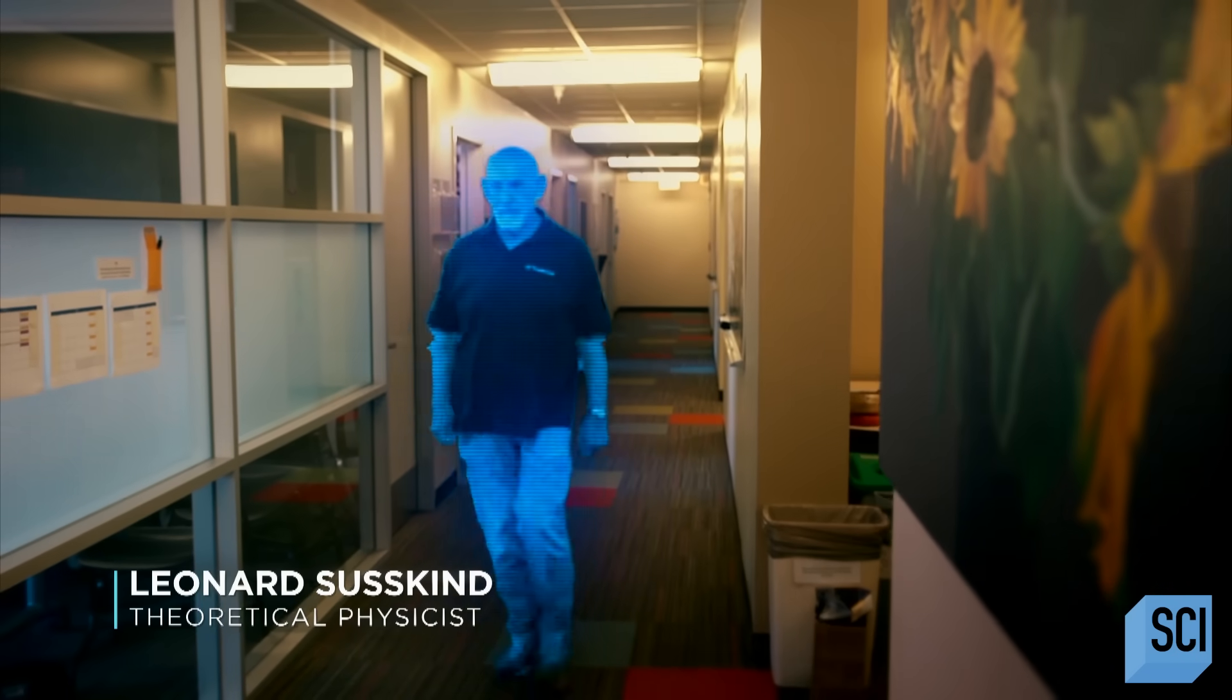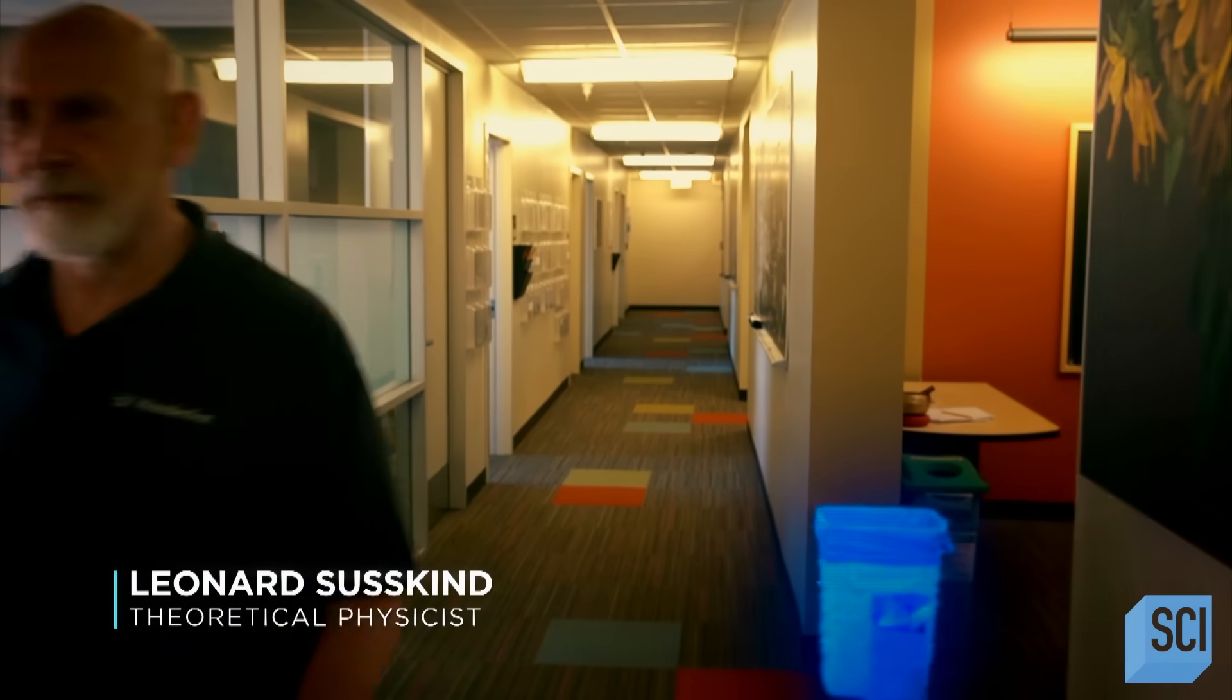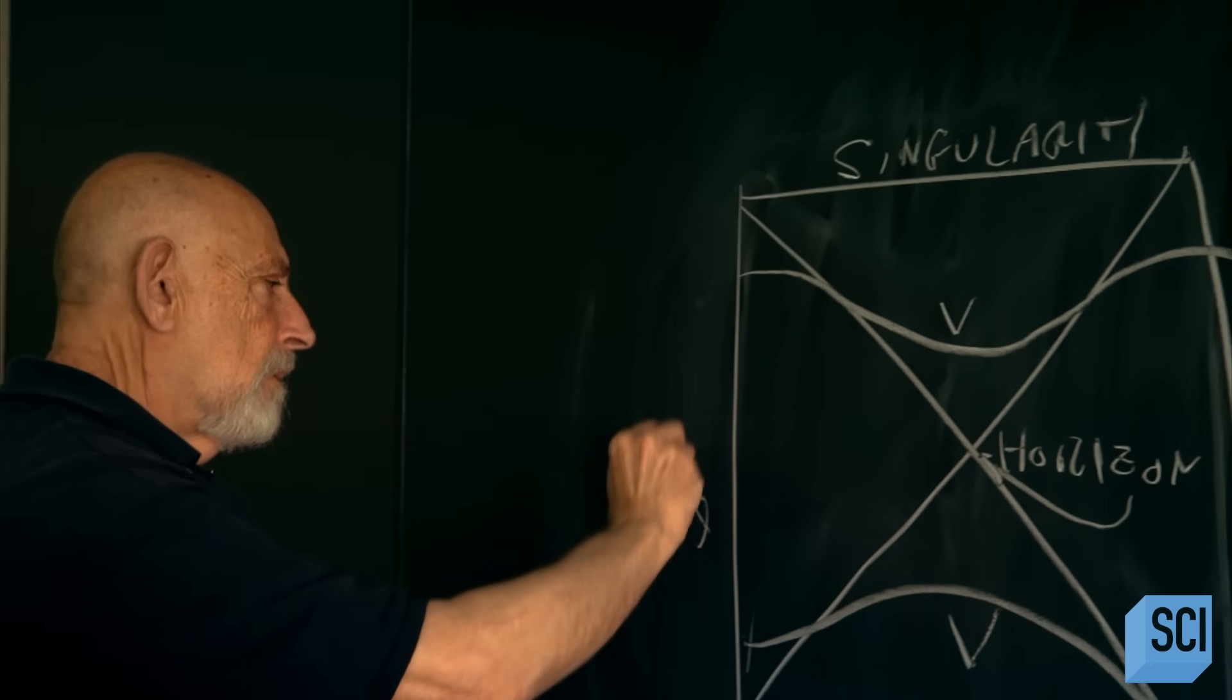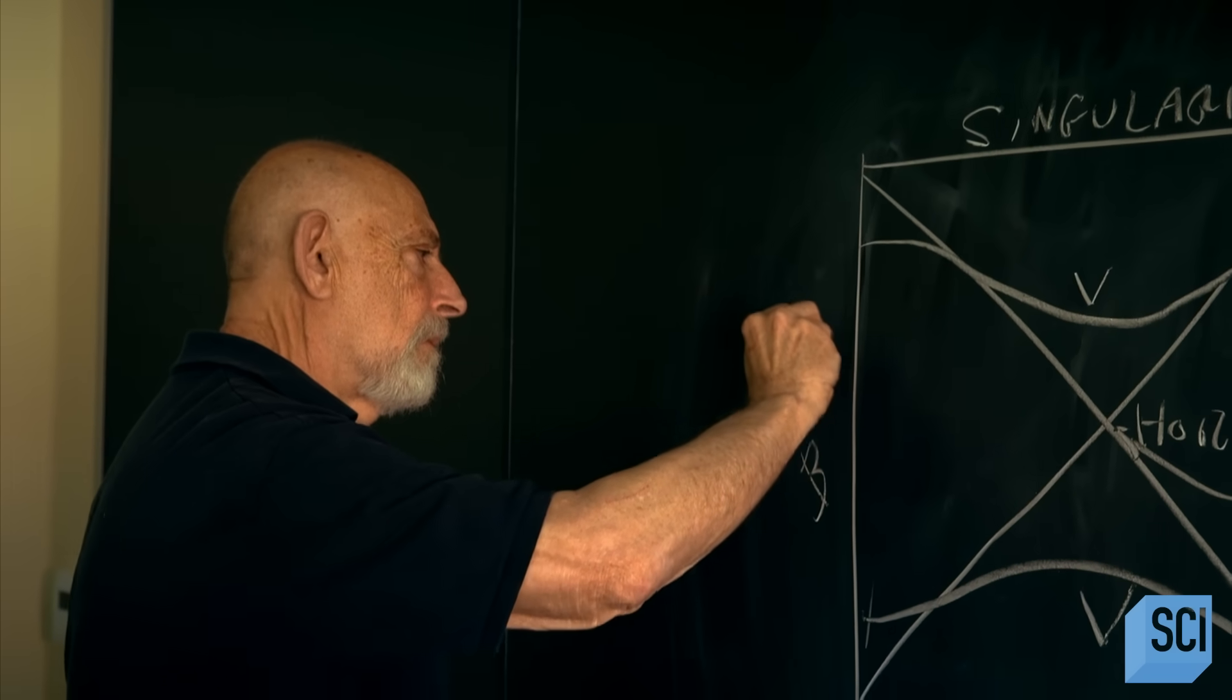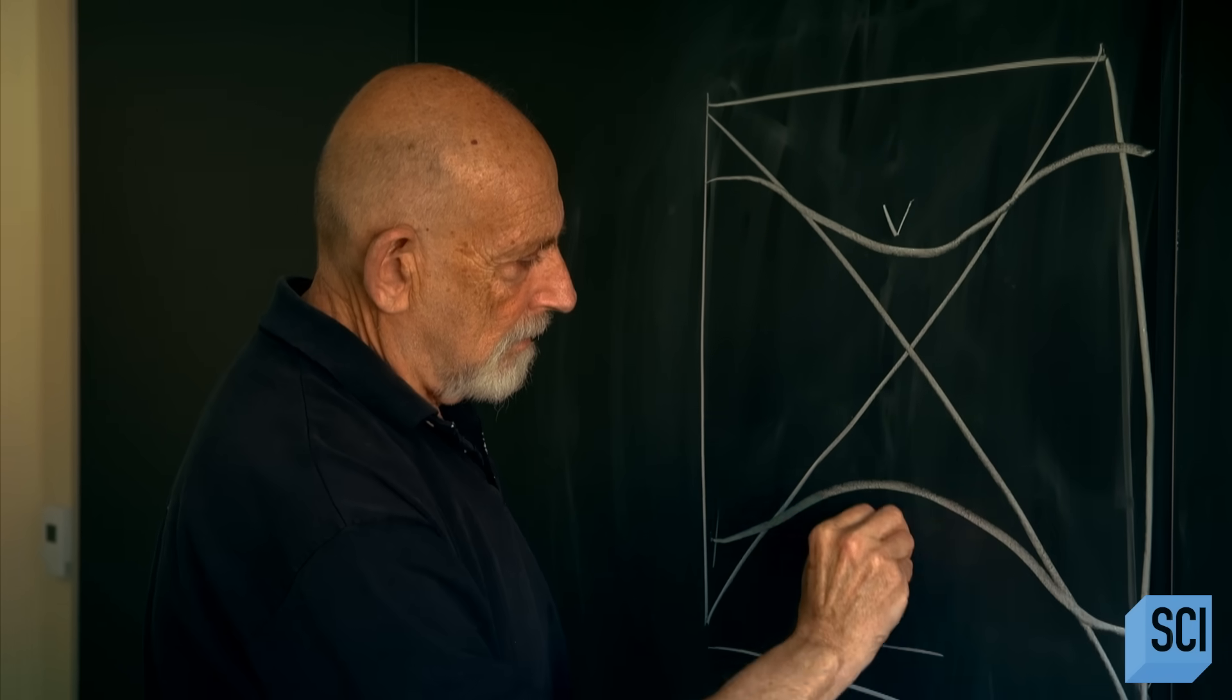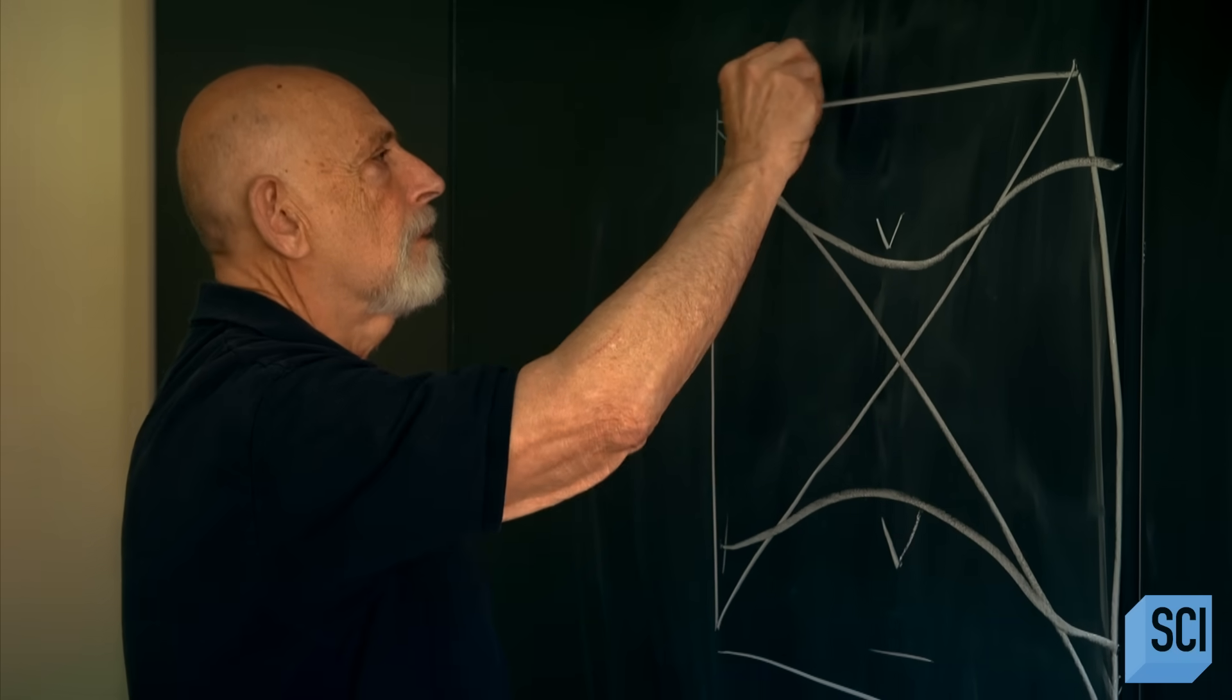Legendary physicist Leonard Susskind was part of a group of theorists who began to suspect there's more to our universe than the reality we see. They were trying to solve one of the greatest dilemmas in the world of physics. Gravity and quantum mechanics were at each other's throats, so to speak. Putting these ideas together has become the central question of physics.